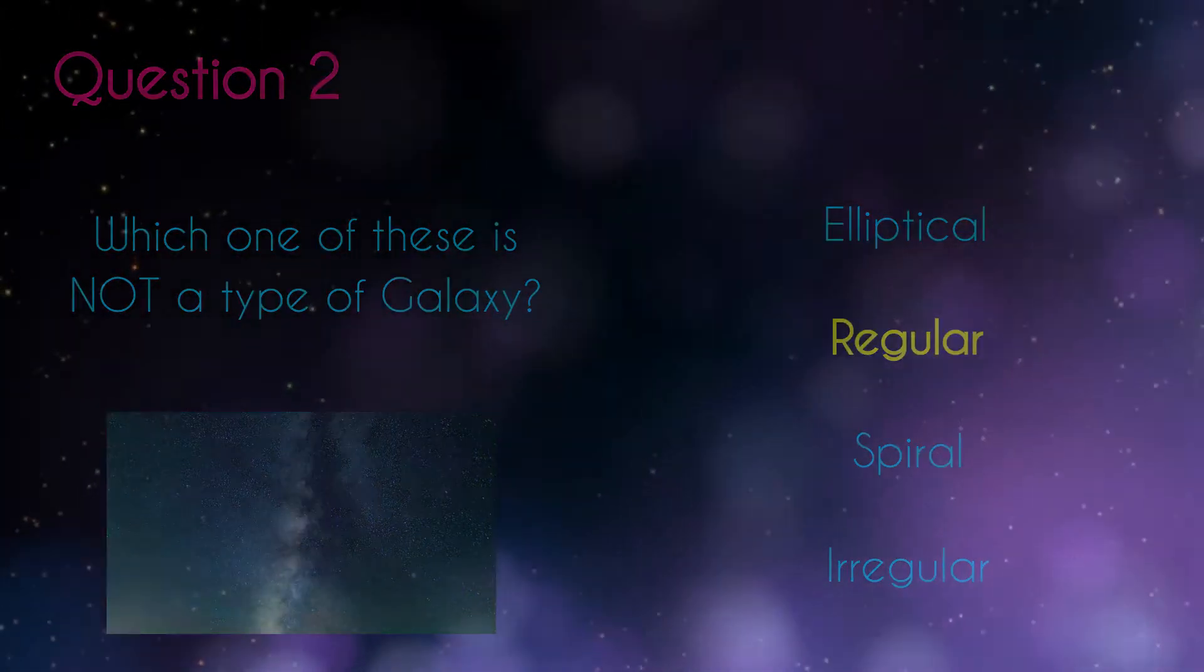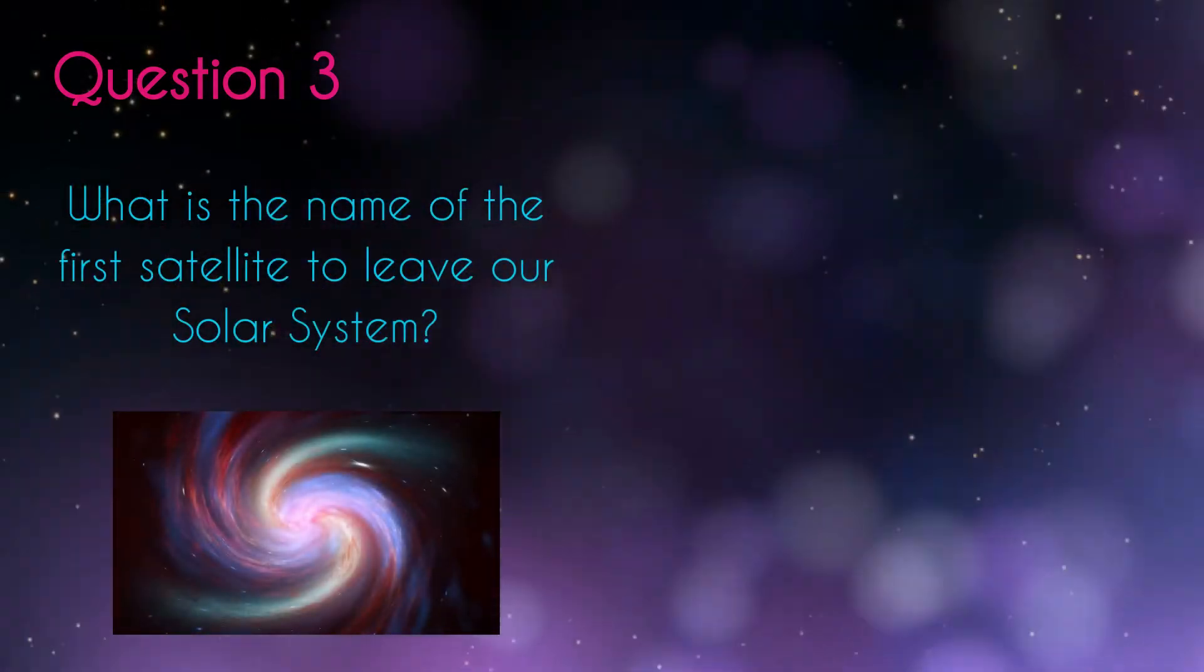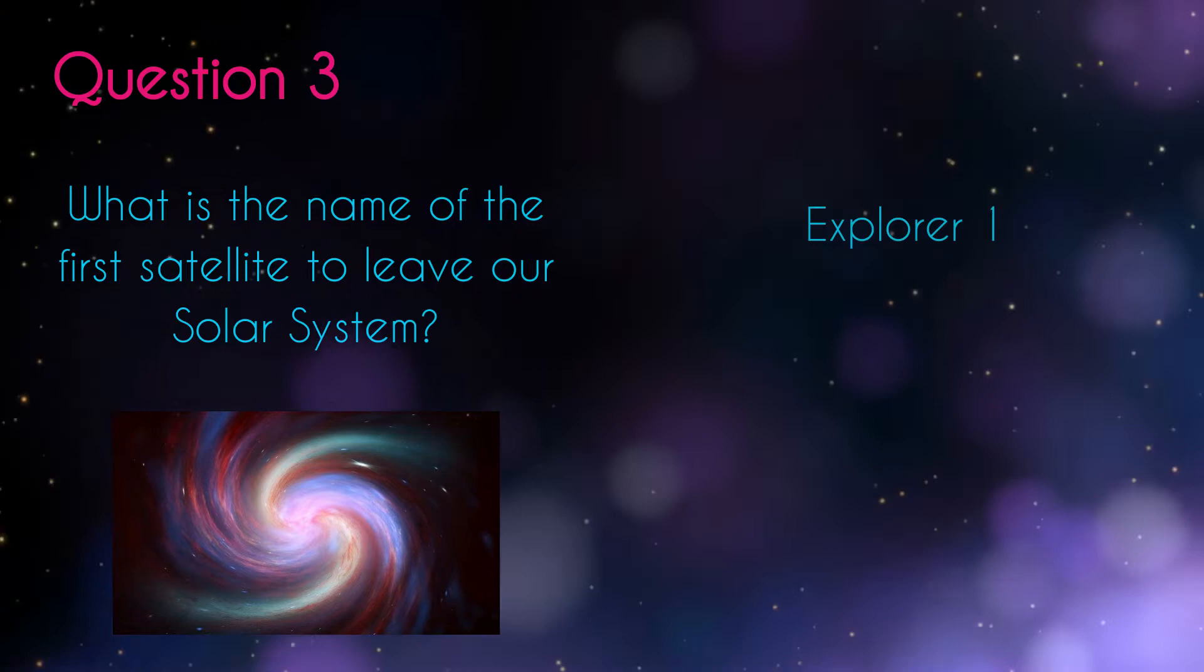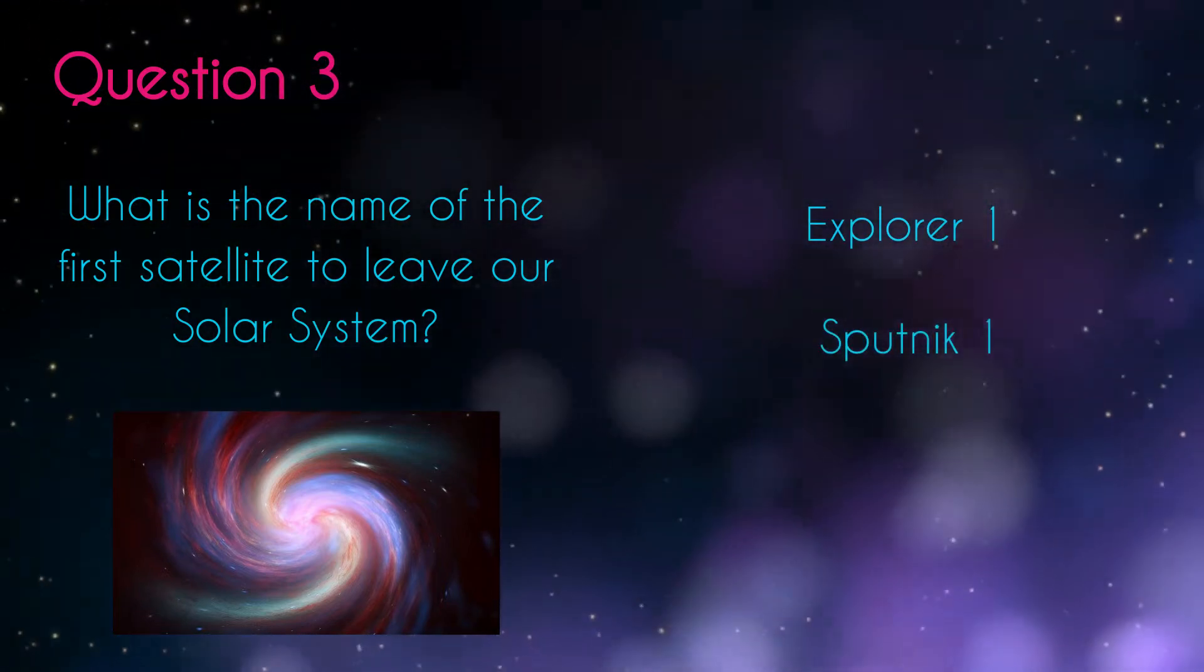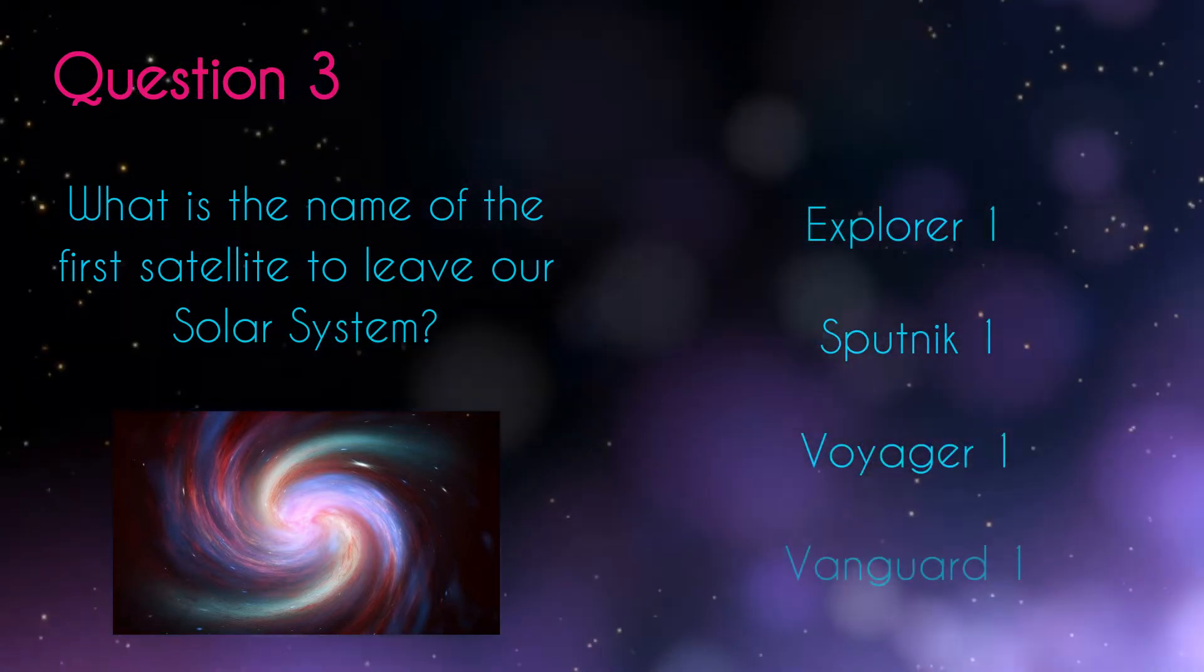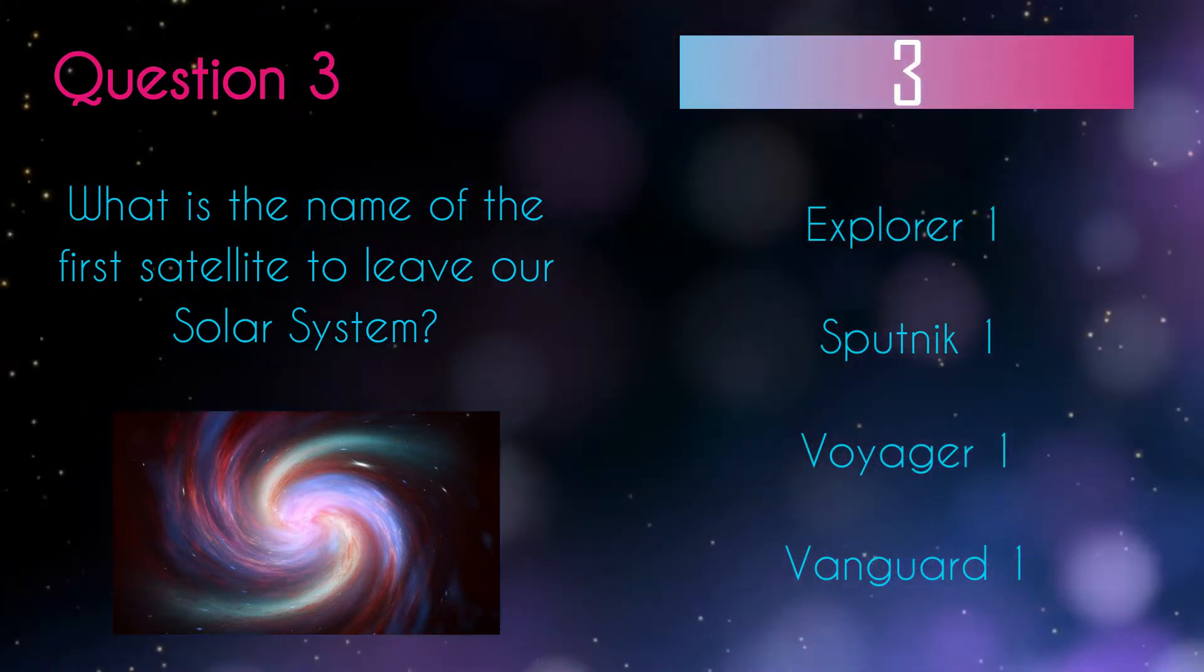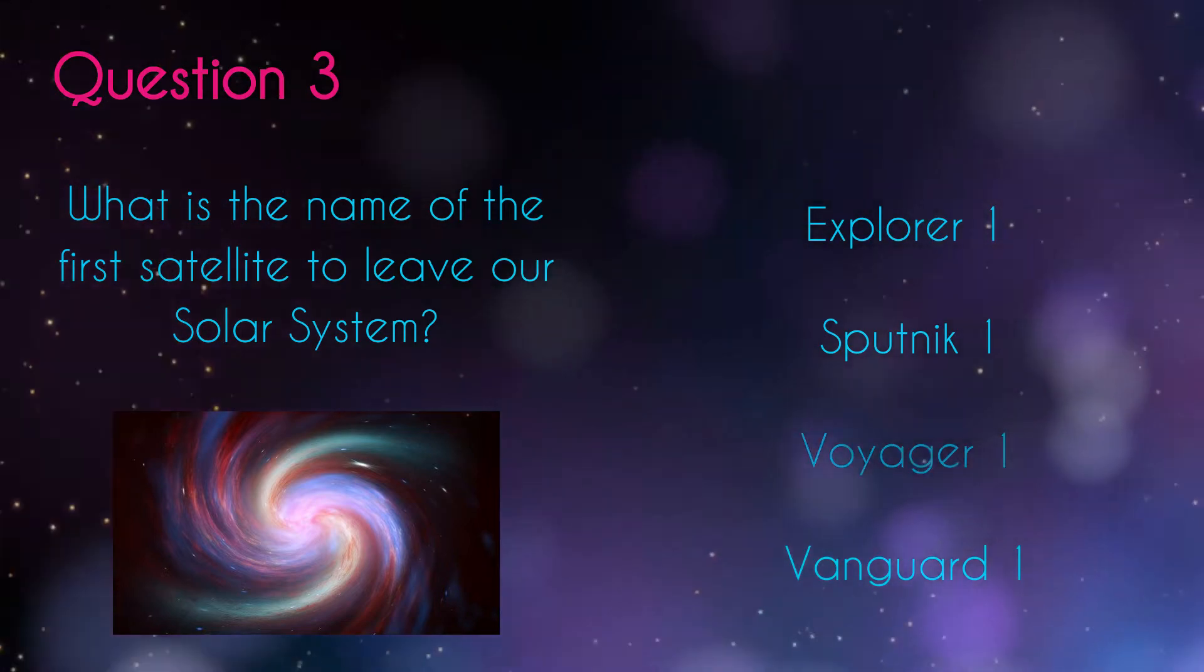Question three. What is the name of the first satellite to leave our solar system? Explorer one, Sputnik one, Voyager one, Vanguard one. Voyager one.